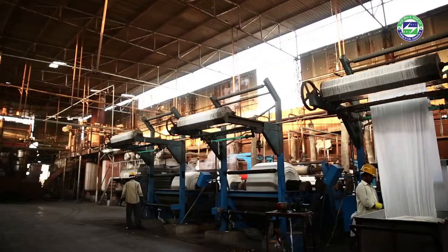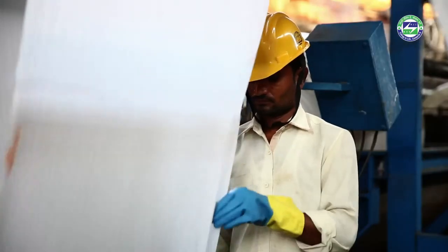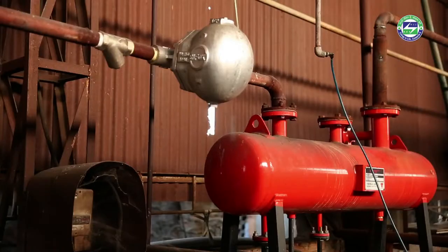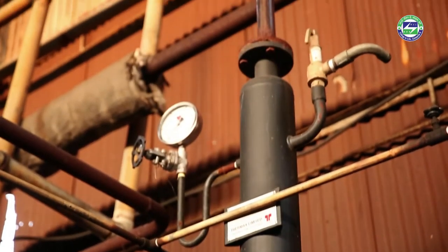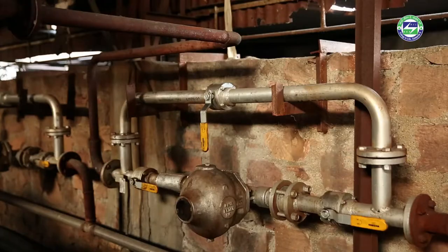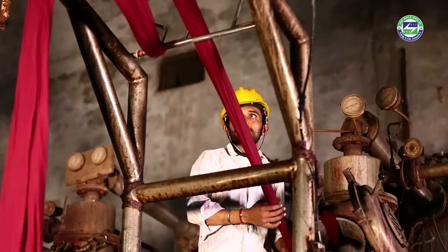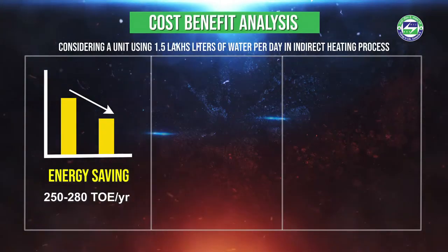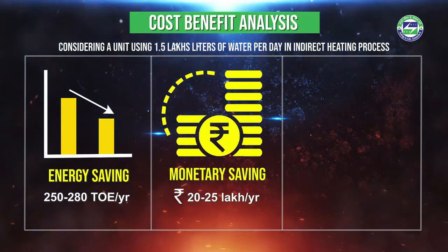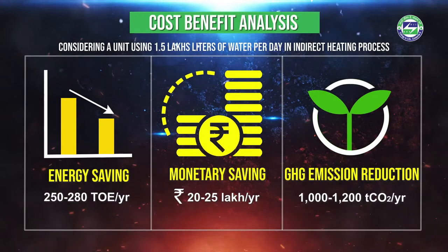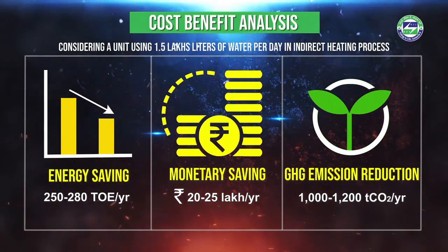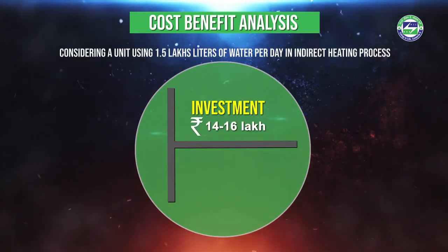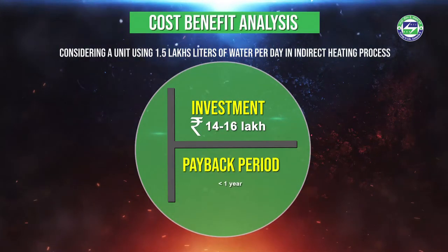To understand the cost-benefit analysis, consider a unit using 1.5 lakh liters of water per day in an indirect heating process. The installation of the condensate recovery system would lead to fuel savings of around five hundred tons and water savings of around one thousand kilolitres. This implies energy savings of 250 to 280 tons of oil equivalent, monetary savings of rupees twenty to twenty-five lakhs, and GHG emission reduction of one thousand to twelve hundred tons of CO₂ per year.